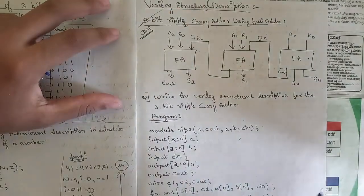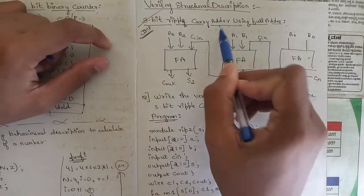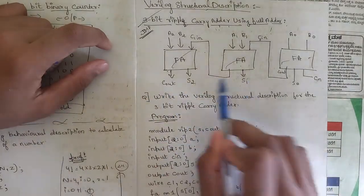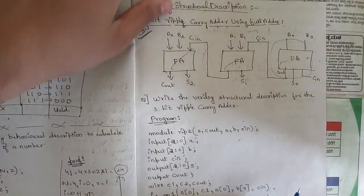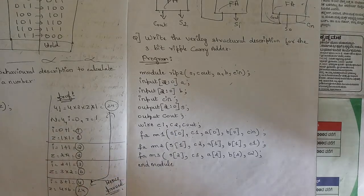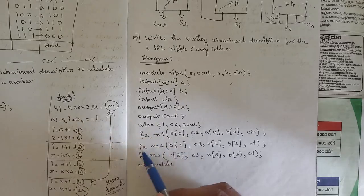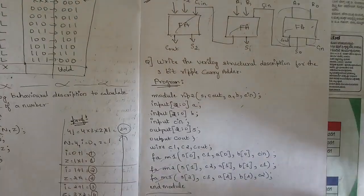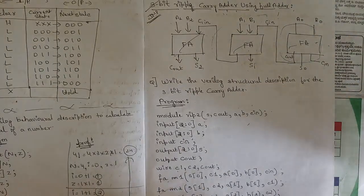One fixed question from Module 5 is Verilog structural description of a 3-bit ripple carry adder using full adders. Use three full adder instances; inputs are A0, B0, A1, B1, A2, B2. Always start from the right-hand side. Declare first, second, and third full adder instances, and mention all sum and carry bits separately, ending with end module. Please note this code — it is very very important.